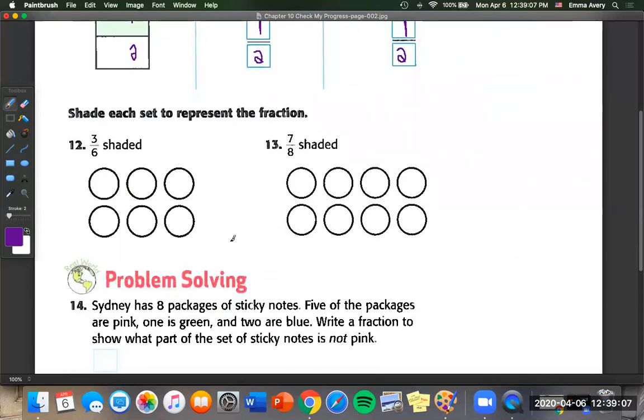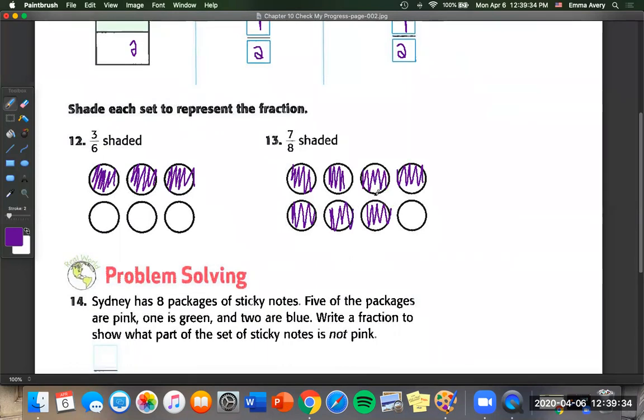Now we're going to shade each set to represent the fractions. So three sixths. Well, we're just going to shade one, two, three pieces. And then we have three blank. Thirteen. We want seven eighths shaded. So we're just going to shade seven of them. One, two, three, four, five, six, and seven, leaving one blank.